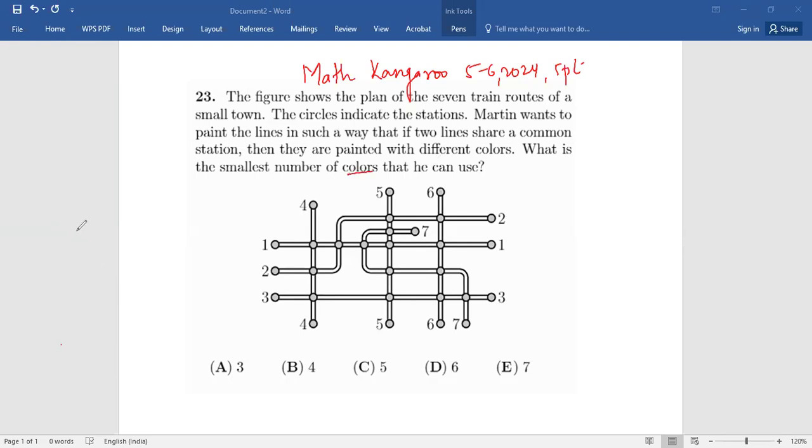Now if you see, number one is sharing stations with four, five or five, six, and two, and seven. But it is not sharing any station with number three. So one and three can be of the same colors because they are not sharing any stations.